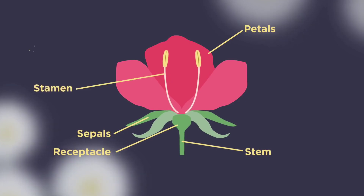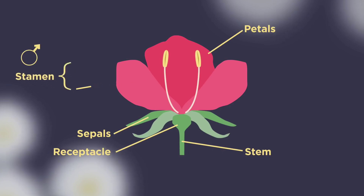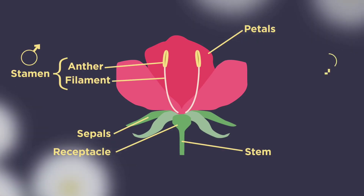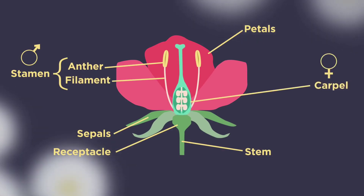The stamen is the male part of the flower. It consists of an anther and filament. The anther contains pollen grains, whereas the filament supports the anther. The female part of the flower is the carpel or pistil.